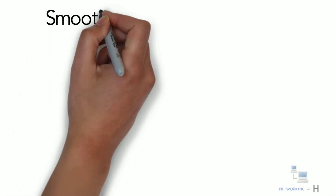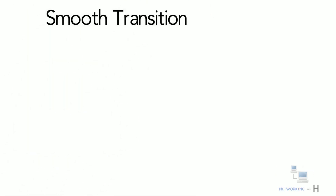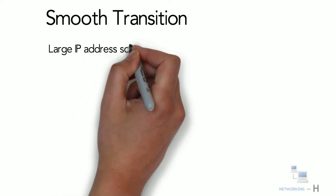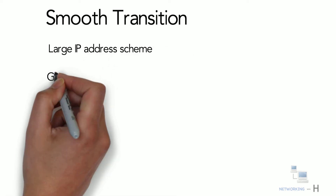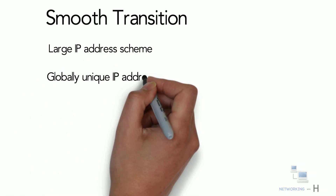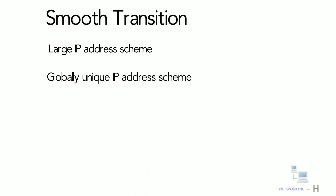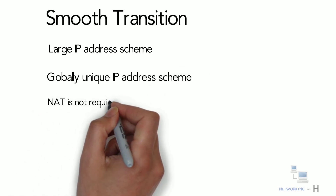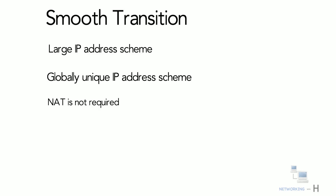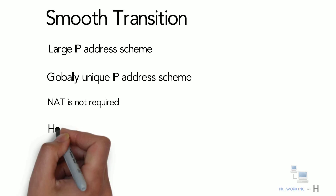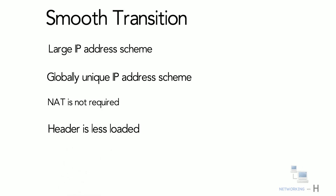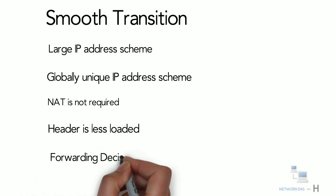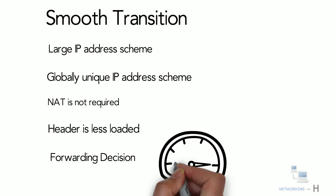Another feature is smooth transition. The large address scheme of IPv6 enables devices to be allocated globally unique IP addresses, meaning NAT is not required. Devices can send or receive data among each other more efficiently — for example, VoIP or streaming media. Additionally, the header is less loaded, so routers can take forwarding decisions and forward packets as quickly as they arrive.